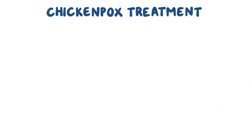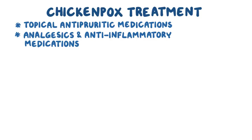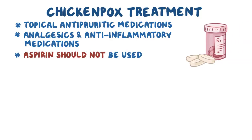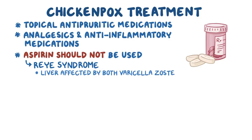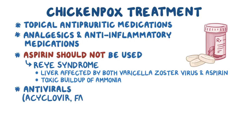Chicken pox treatment mainly includes the use of topical antipyretic medications to help reduce itching. Analgesics and anti-inflammatory medications can help reduce the fever, but aspirin should not be used in someone with chicken pox because it can trigger Reye's syndrome — where the liver is affected by both varicella zoster virus and aspirin, leading to a buildup of ammonia in the body. In immunocompromised individuals, antivirals like acyclovir, famciclovir, and valacyclovir can be used.